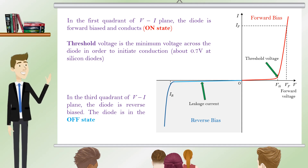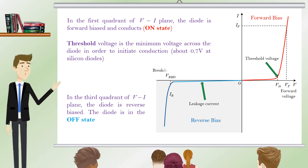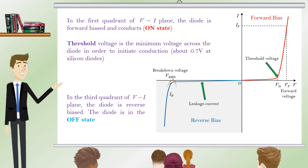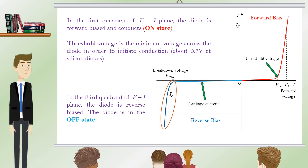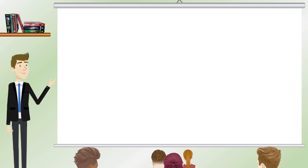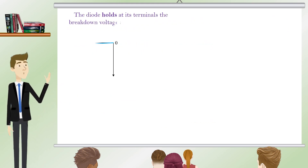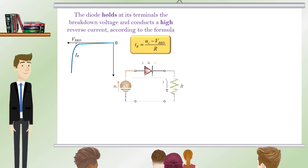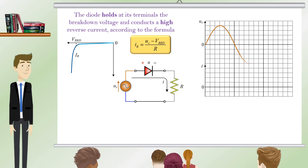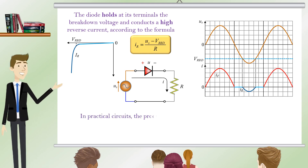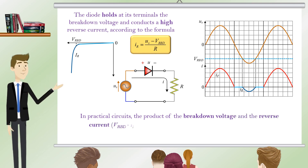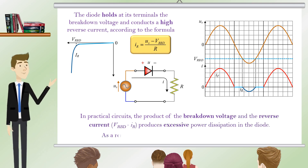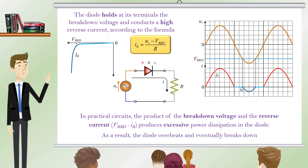If the instantaneous reverse voltage across the diode exceeds a maximum value called the breakdown voltage, the diode cannot support the applied voltage. In this case, the diode holds at its terminals the breakdown voltage and conducts a high reverse current according to the formula. In practical circuits, the product of the breakdown voltage and the reverse current produces excessive power dissipation in the diode. As a result, the diode overheats and eventually breaks down.